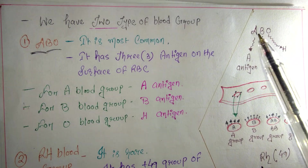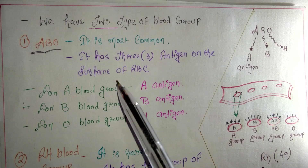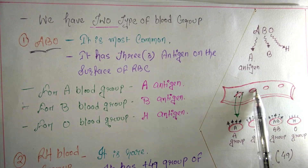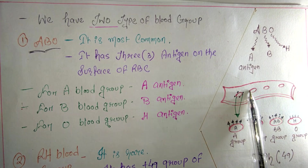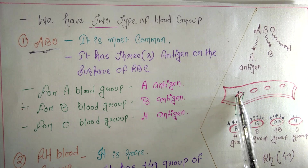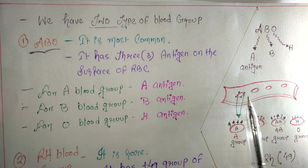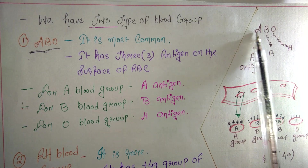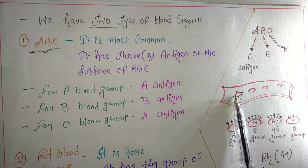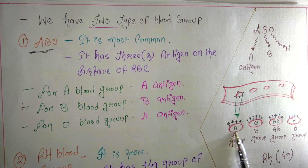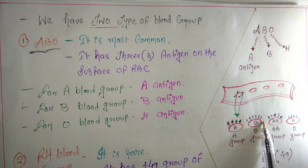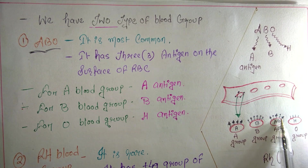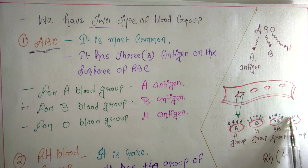The ABO blood group has three antigens on the surface of the RBC. This is the RBC, and on its surface we have antigens. If you have blood group A, you have the A antigen on the RBC surface. If you have blood group B, you have the B antigen. If you have blood group AB, you have both A and B antigens. If you have blood group O, you have the H antigen on the surface of the RBC.